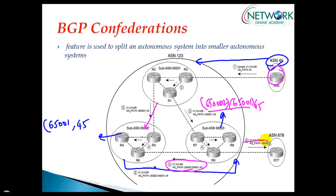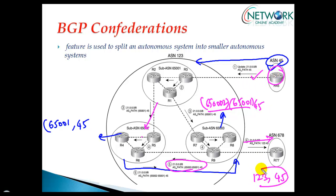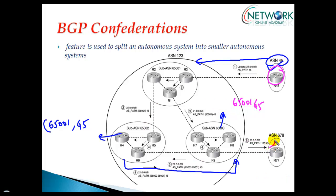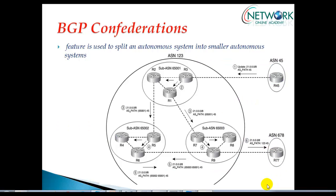When the update finally goes outside, it will be seen as originating from AS 45 and going through AS 123 — that's it. So when you see the BGP information externally, it will just be AS 45 and AS 123. This is how confederations works — it's an easy way to manage a very big autonomous system number.